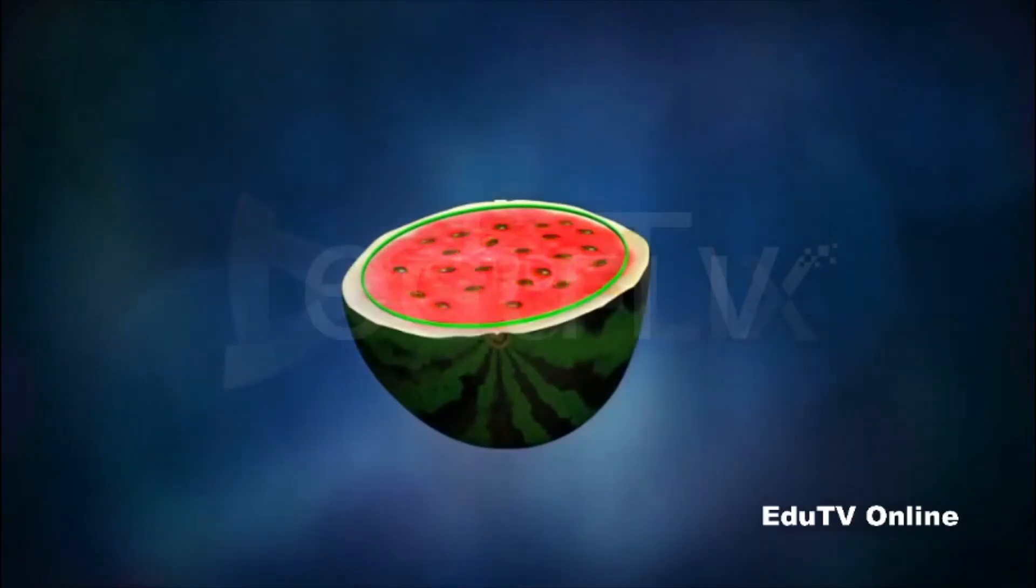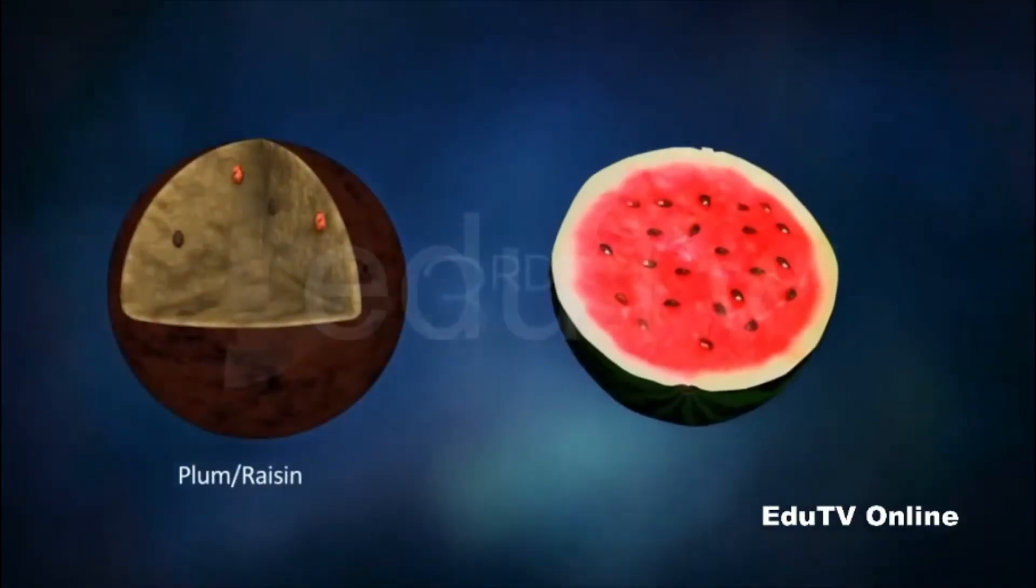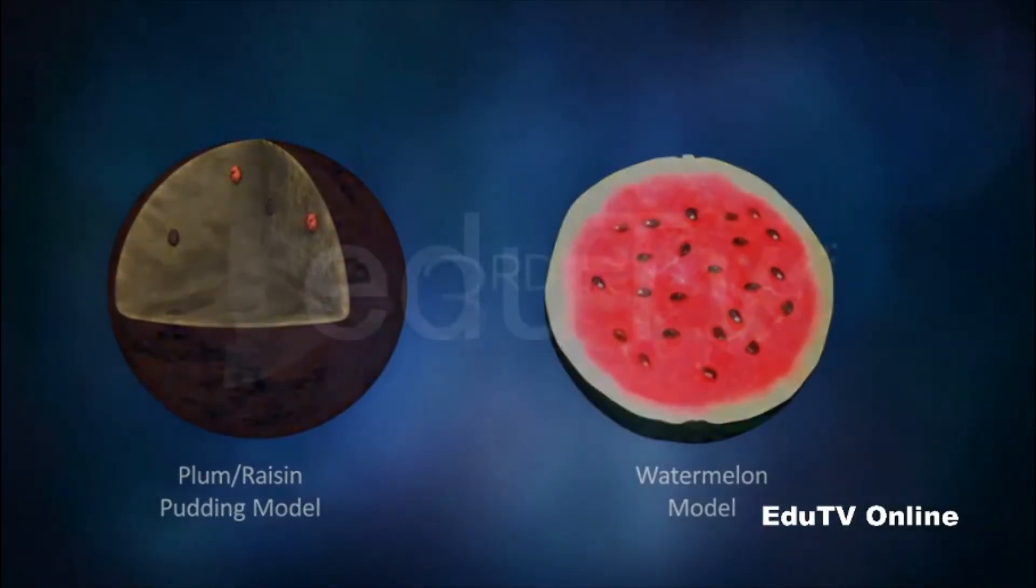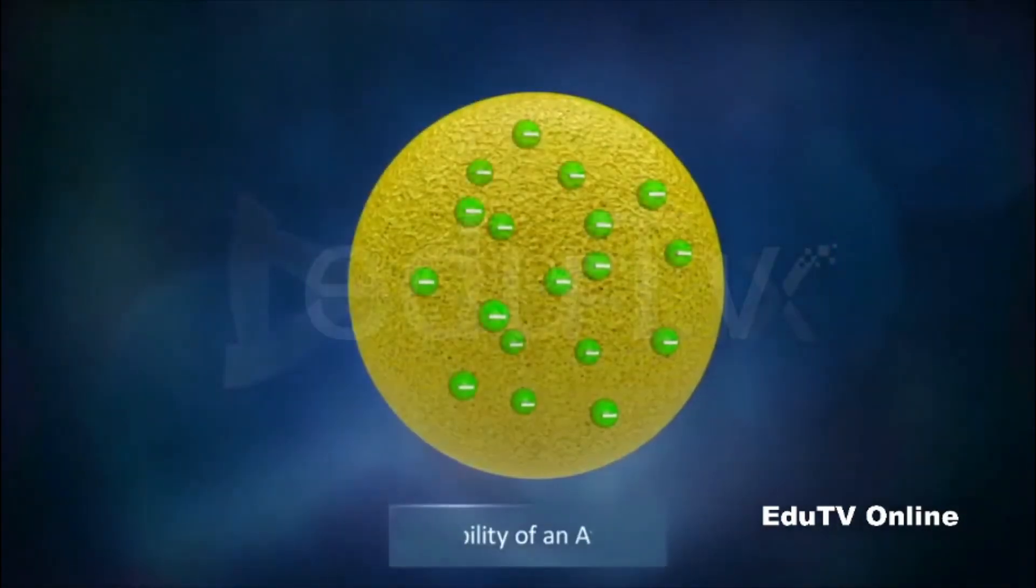Just like the plums or raisins or seeds that are embedded in a watermelon. Hence, this model of atom is also called as plum pudding model, or raisin pudding model, or watermelon model.